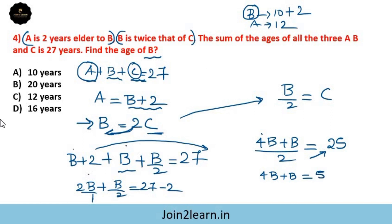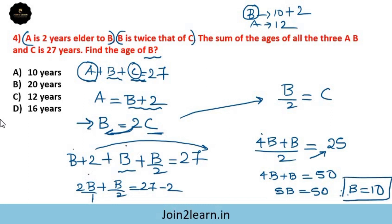5B divided by 2 equals 25, so 5B equals 50, therefore B equals 50 divided by 5, which gives B equal to 10. So option A is the right answer.